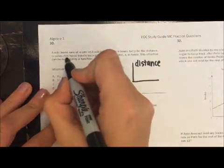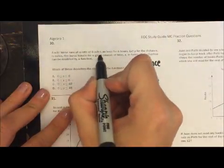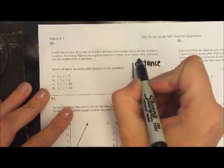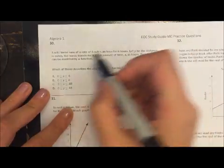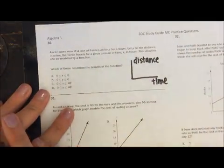Alright, and I'm talking about miles. The horse travels for a given amount of time x in hours. So x is going to be time in hours. This situation can be modeled by a function.